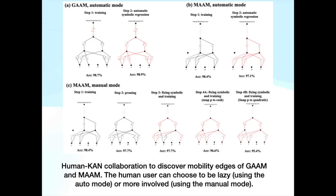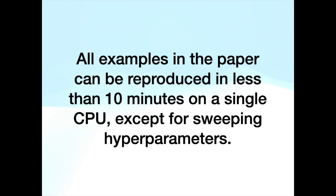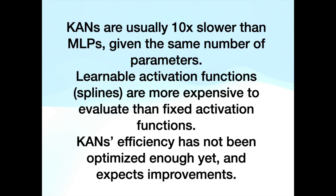Human-KAN collaboration to discover mobility edges of GAAM and MAAM. The human user can choose the lazy auto mode or the more involved manual mode. All examples in the paper can be reproduced in less than 10 minutes on a single CPU, except for sweeping hyperparameters. KANs are usually 10 times slower than MLPs given the same number of parameters.